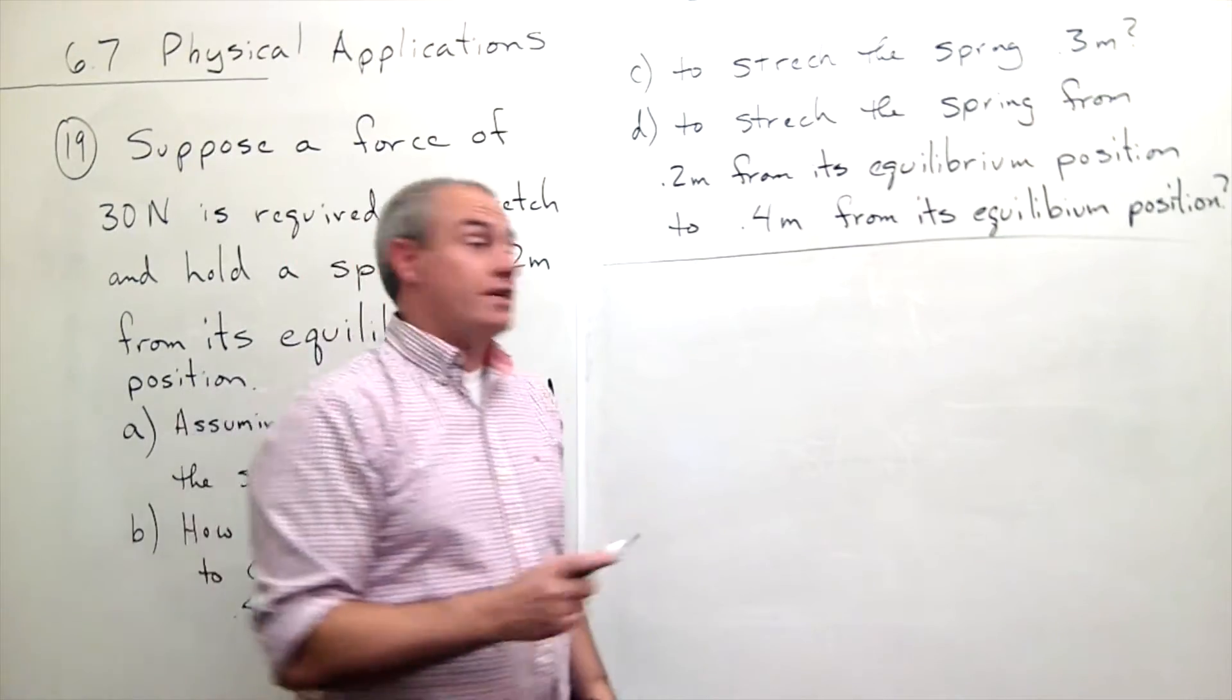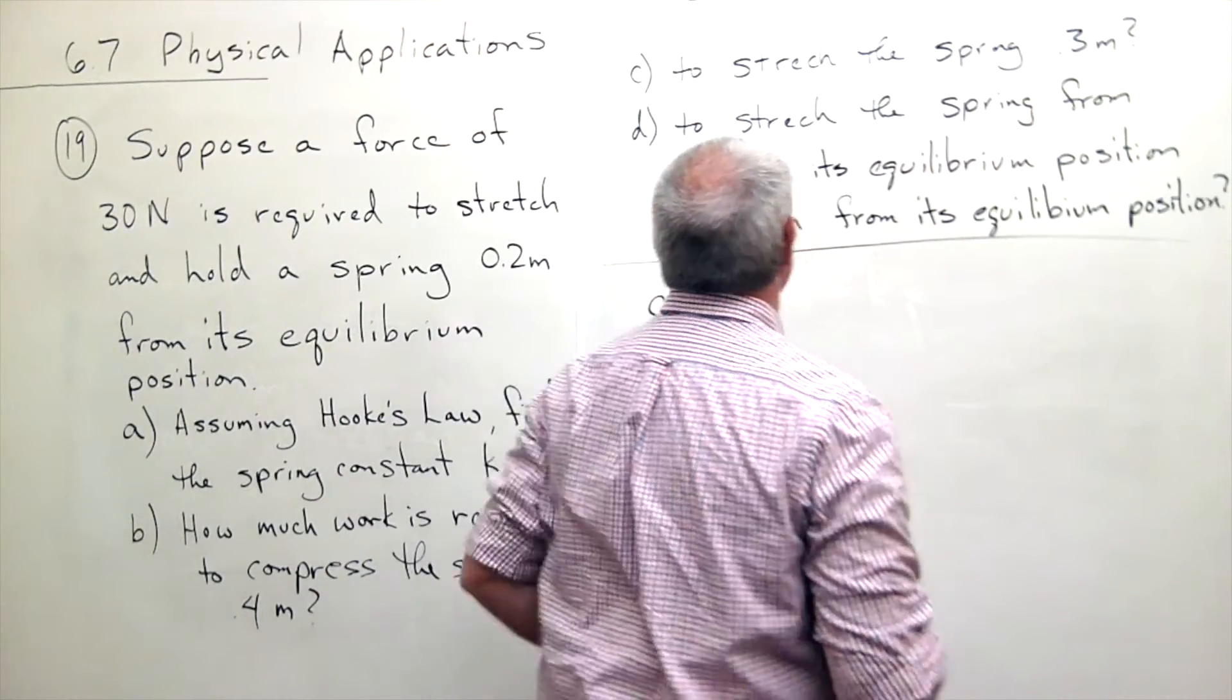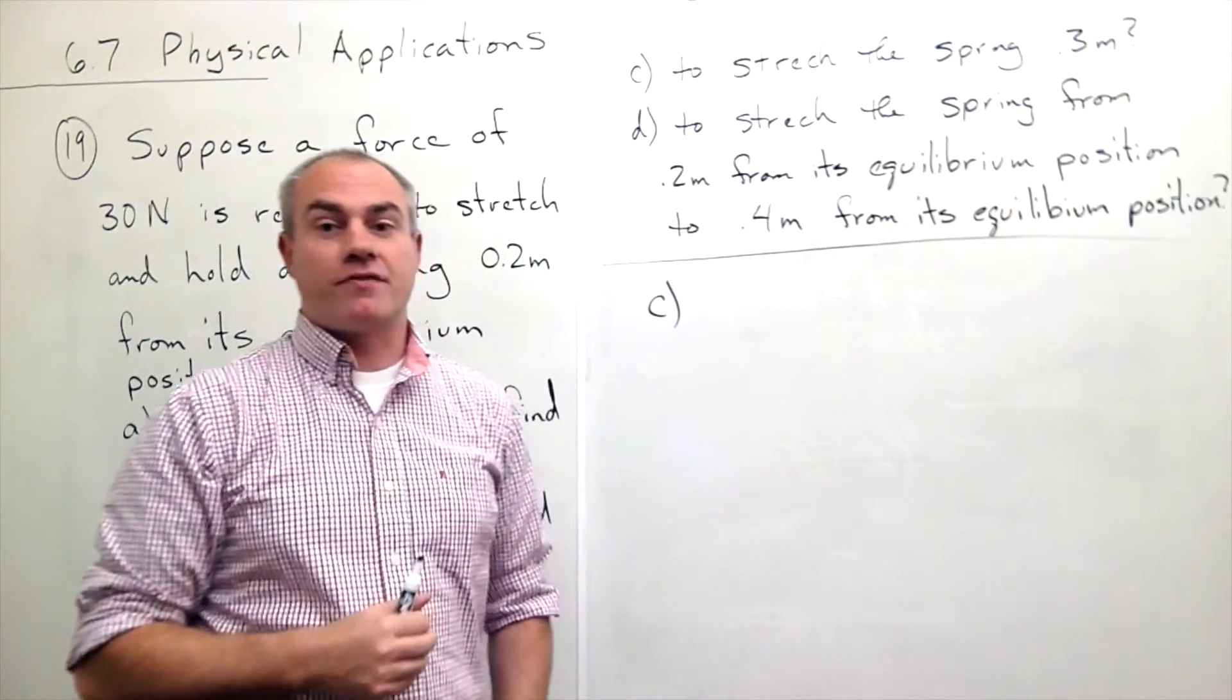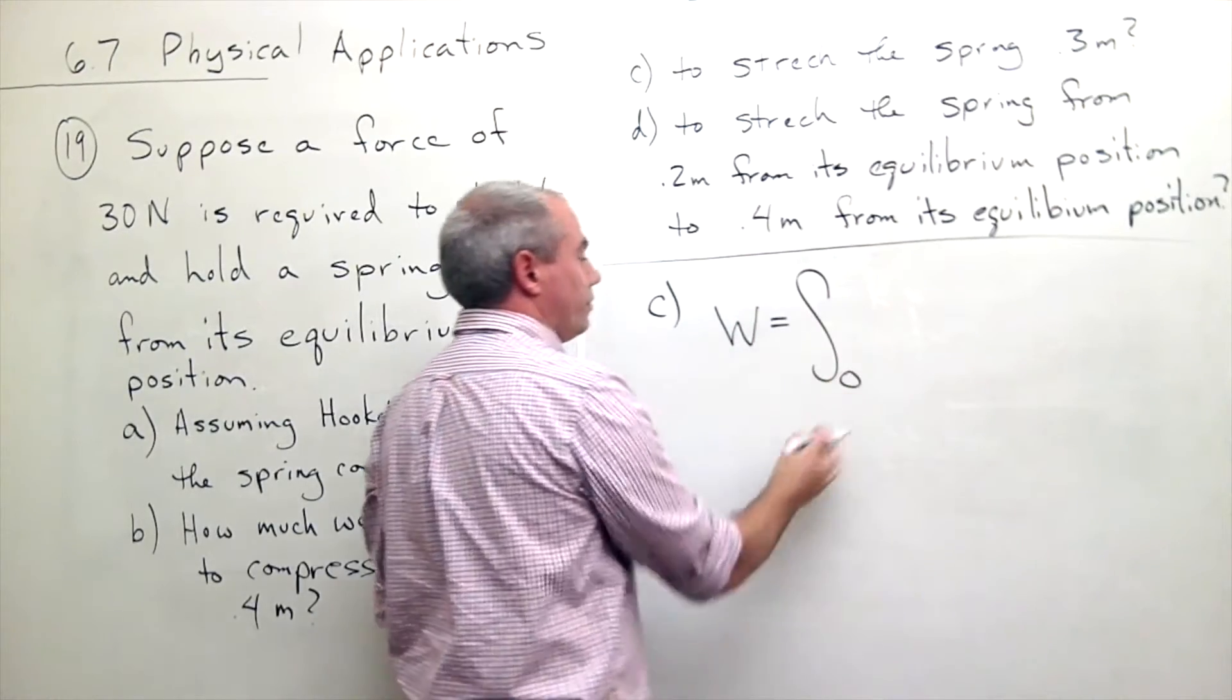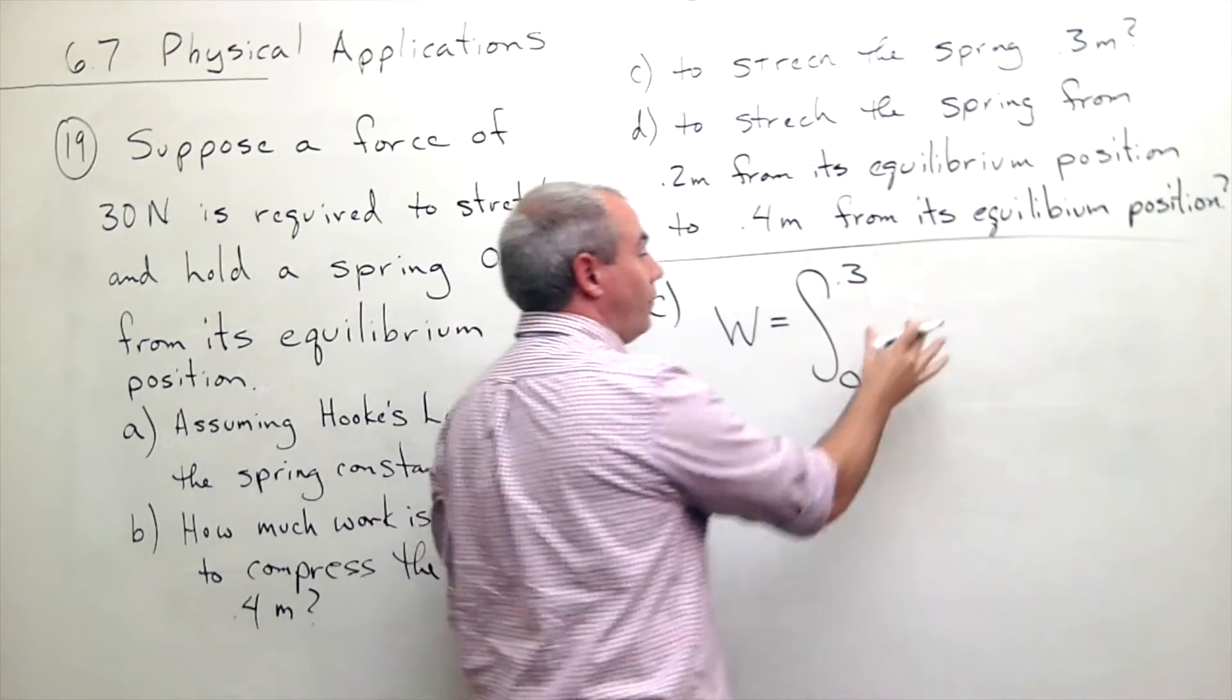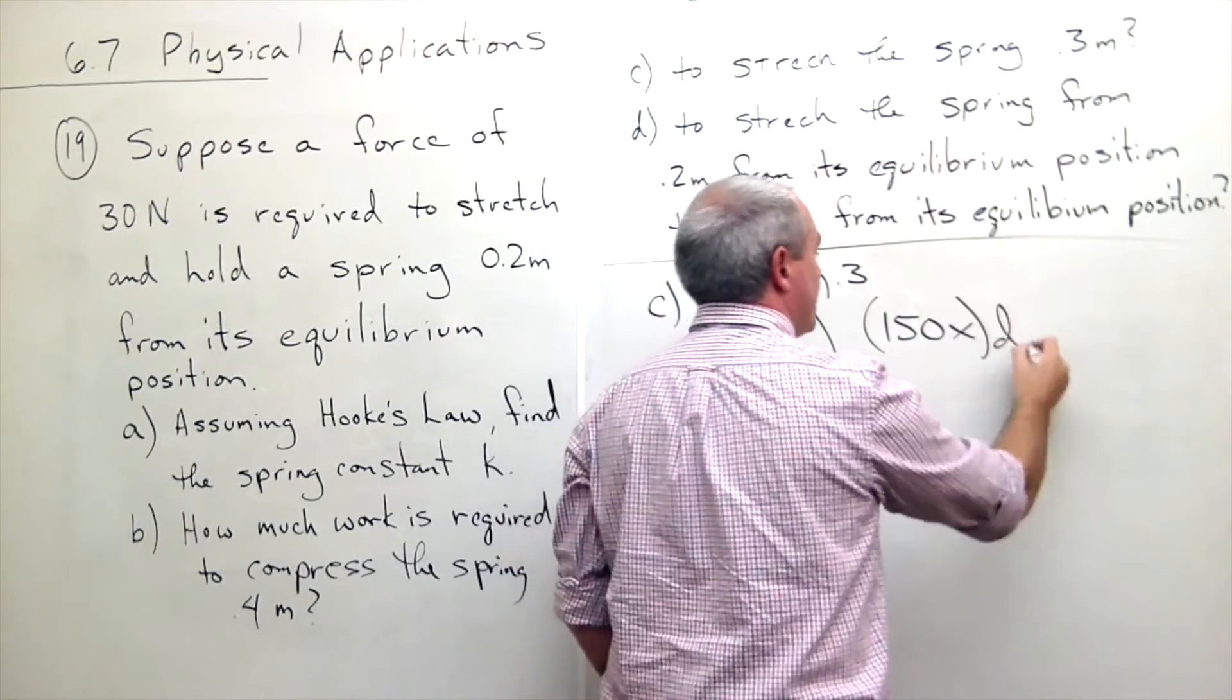In part C we're asked how much work does it take to stretch the spring out to 0.3 meters from the equilibrium position. And so work in this case is going to be equal to the integral from 0 to 0.3 of this same force, which is 150 X DX.